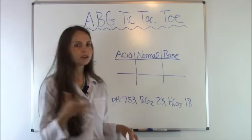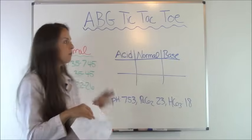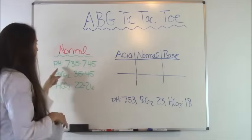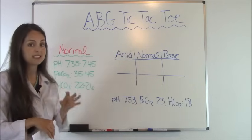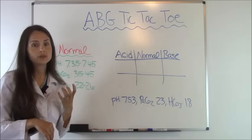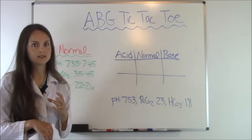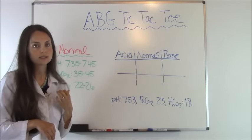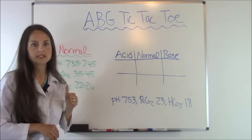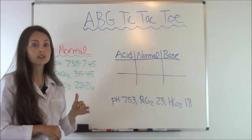In nursing school, you're given basic lab values: the pH level, the metabolic level, and the respiratory level. Your normal pH is 7.35 to 7.45 — anything less than 7.35 is an acid, anything over 7.45 is alkalotic. PaCO2 represents respiratory levels and it's the opposite of pH: anything over 45 is an acid, anything under 35 is alkalotic. Metabolic, represented by HCO3, is 22 to 26 normal — same as pH: less than 22 is an acid, over 26 is alkalotic.